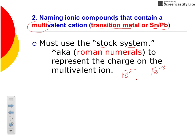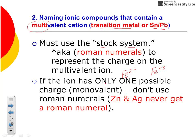So this one would be called iron Roman numeral II, and this would be called iron Roman numeral III. That's really the only difference. If the ion has only one possible charge — monovalent, like the type one we just looked at — you don't need a Roman numeral. So zinc and silver will never need a Roman numeral because there's only one possible charge.